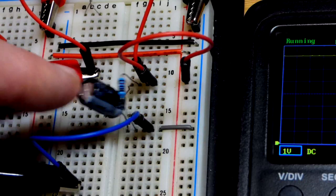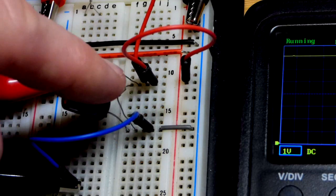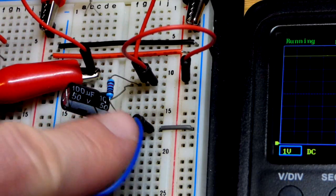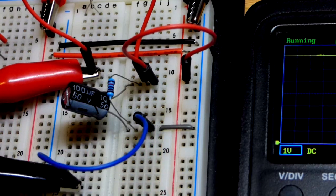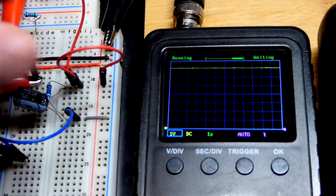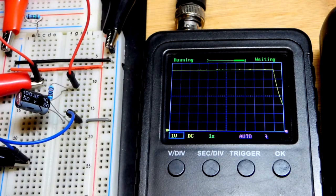Now we have the 100 microfarad capacitor with 10,000 ohm resistor right there. So we'll also get a one second time constant right there approximately. And there we go.